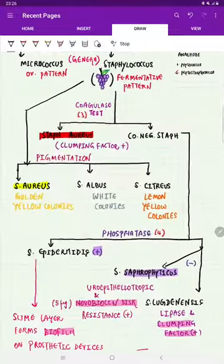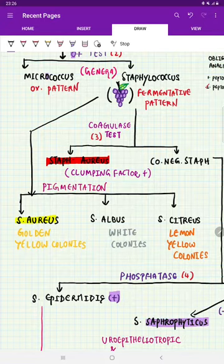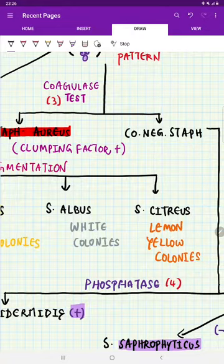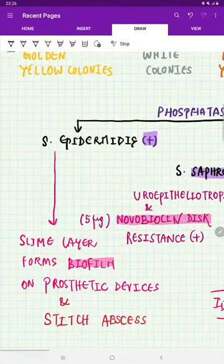Now, another classification of staphylococcus is by pigment. Pigment production: Staphylococcus aureus produces golden yellow colonies, Staphylococcus albus—alba means white colonies, Staphylococcus citreus—citrus, lemon, so lemon yellow colonies. Let us see the important points regarding coagulase negative staphylococcus.